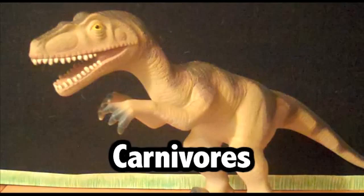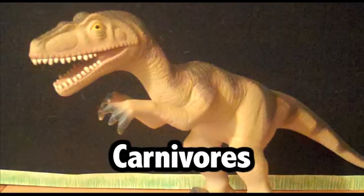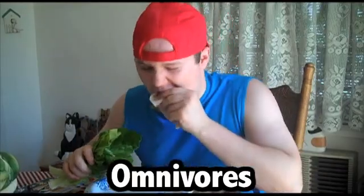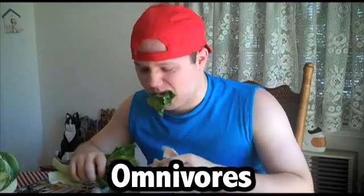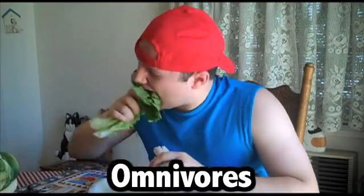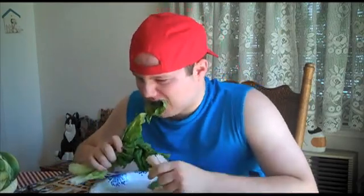Carnivores, on the other hand, like this Velociraptor, have teeth that are made to cut meat. They rarely eat plants. Omnivores are animals that have teeth that help them eat both plants and meat. We are omnivores because we eat plants and meat.